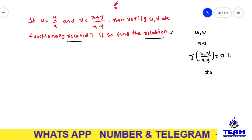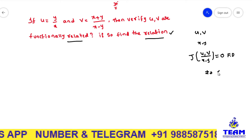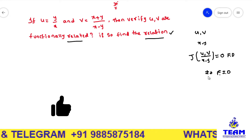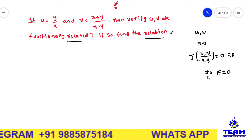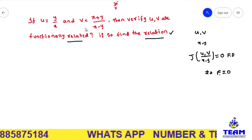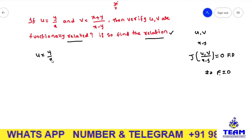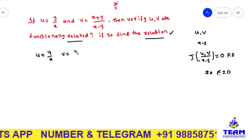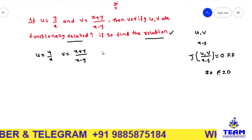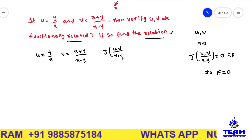To repeat: functionally dependent means you have to get Jacobian equal to 0; functionally independent means you have to get a value not equal to 0. Till now many problems we have done with functionally independent. Just now we have to verify this is functionally related or not. The given functions are u is y by x and v is equal to x plus y by x minus y. Now we have to find the Jacobian of u comma v with respect to x comma y.